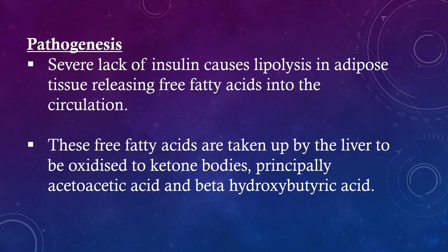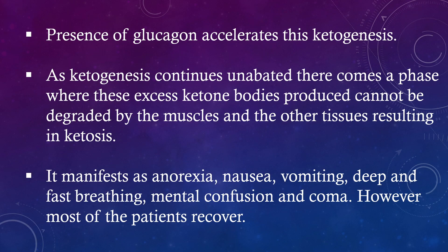These free fatty acids are taken up by the liver to be oxidized to ketone bodies, principally acetoacetic acid and beta-hydroxybutyric acid. Presence of glucagon accelerates this ketogenesis. As ketogenesis continues unabated, there comes a phase where these excess ketone bodies produced cannot be degraded by the muscles and other tissues, resulting in ketosis.